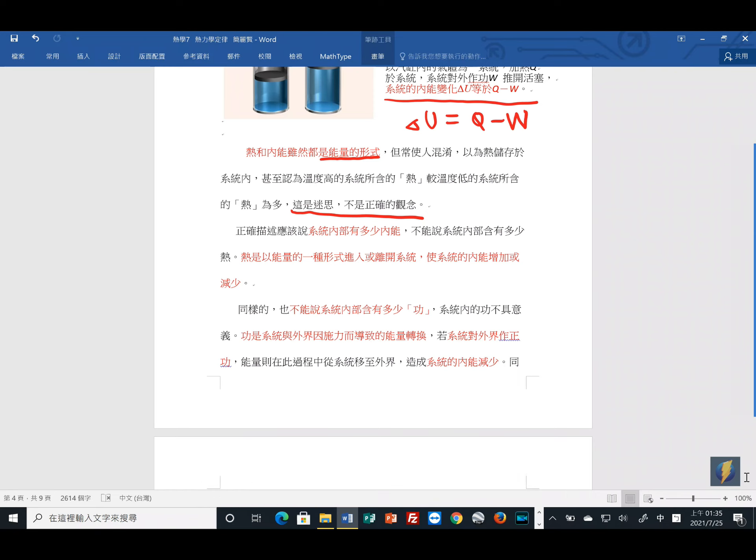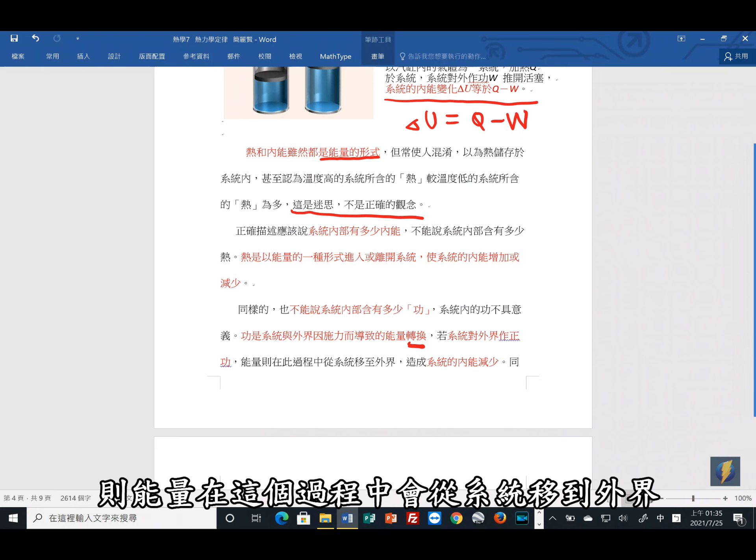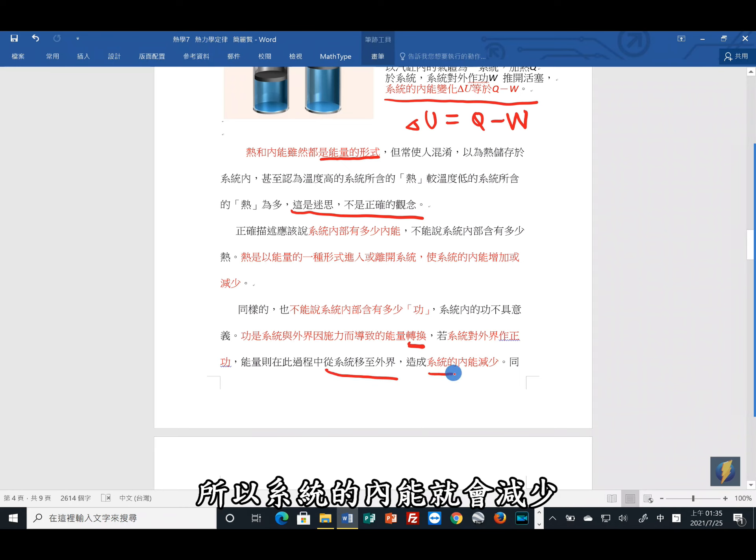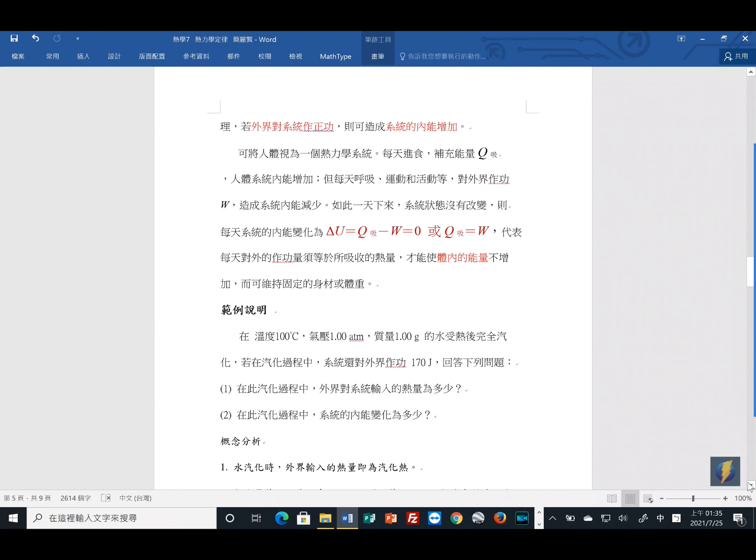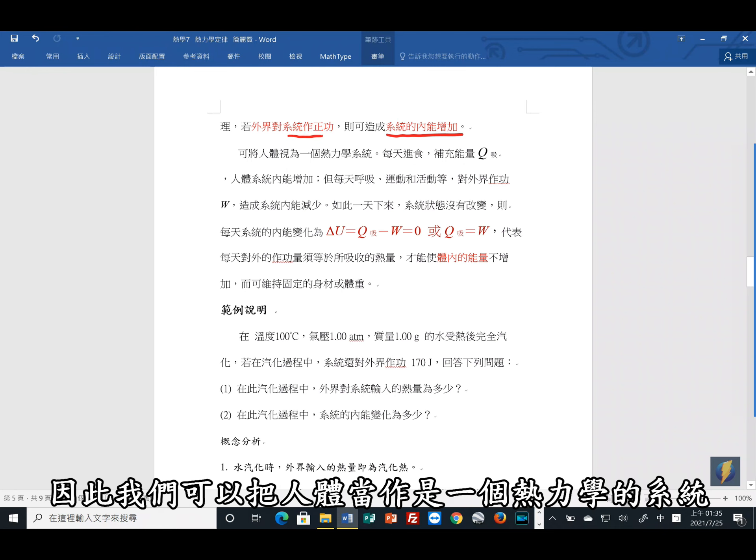同样的,我们也不能说系统内部含有多少功能。系统内的功并不是有意义的物理量。功是系统与外界因为施力而导致的能量转换。所以外界对系统做功这个时候就会有做功转变成能量的概念,它是一种转换的意思。如果系统对外界做正功,则能量在这个过程中会从系统移到外界,所以系统的内能就会减少。同样的,如果外界对系统做正功,则系统的内能就会增加。